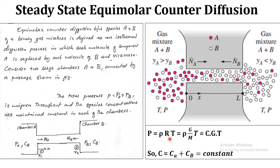Assuming both gases are ideal gases, we have P equal to rho R T, where R is the characteristic gas constant, which can be represented in terms of universal gas constant G divided by molecular weight of the component. Since rho divided by molecular weight gives molar concentration, we can write the total pressure P equal to C G T. Since P and G are constant, the total molar concentration of the mixture C, equal to CA plus CB, will be a constant.